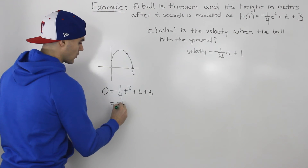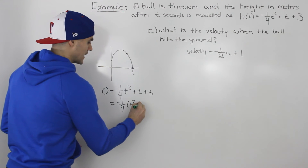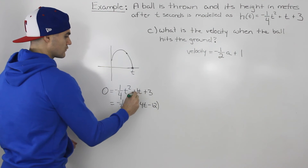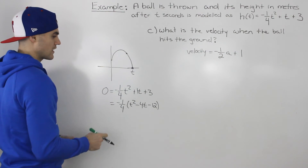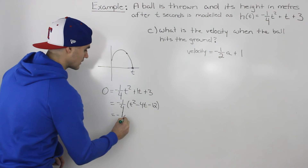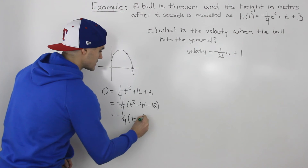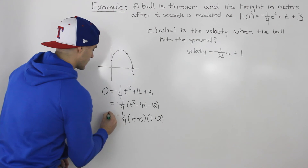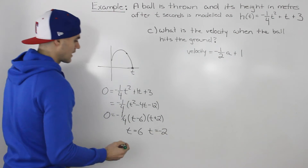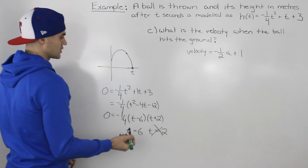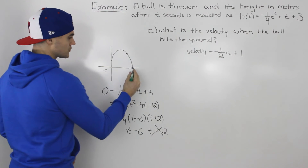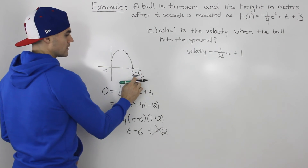We can use the quadratic formula, but it also factors smoothly. Taking out negative one over four, we're left with t squared minus 4t minus 12. That's because one divided by negative one over four is negative four, and three divided by negative one over four is negative twelve. The remaining bracket factors into t minus six and t plus two, all equal to zero. So our answers are t equals six and t equals negative two. However, time can't be negative, so t equals six is when the ball hits the ground.